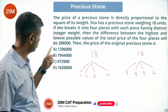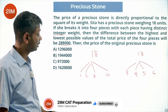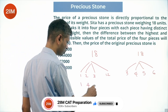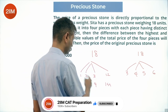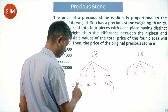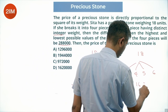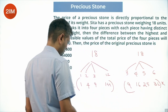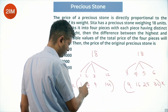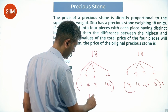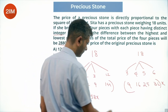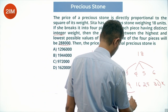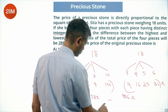The difference between the highest and lowest possible values of the total price of the four pieces will be 28,800 times the price of the original precious stone. Computing the sum of squares: 1² + 2² + 3² + 12² = 1 + 4 + 9 + 144 = 158x. And 3² + 4² + 5² + 6² = 9 + 16 + 25 + 36 = 86x.